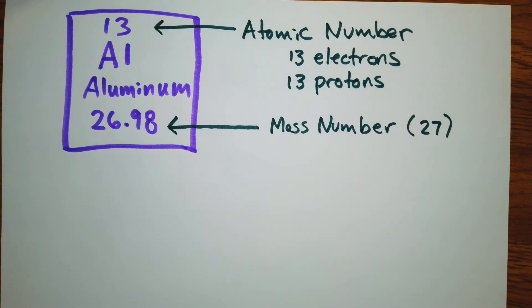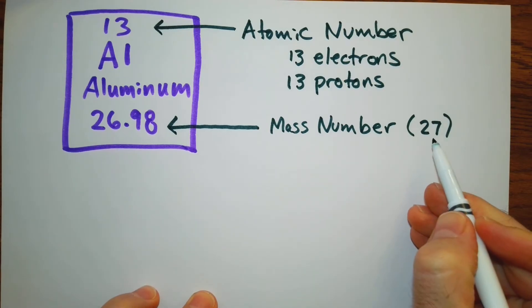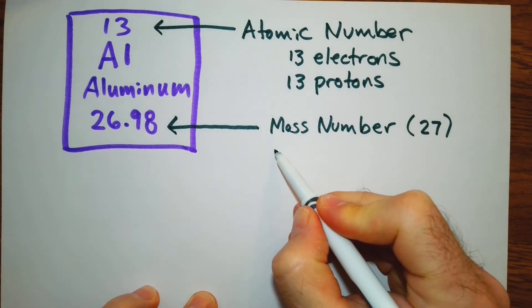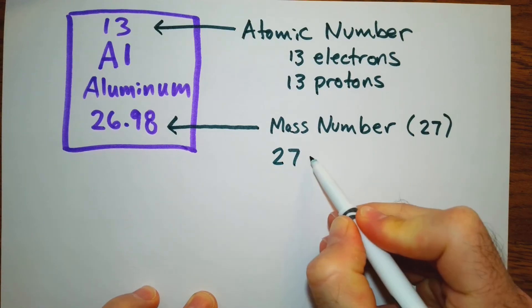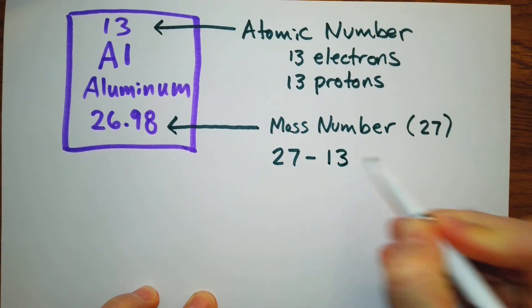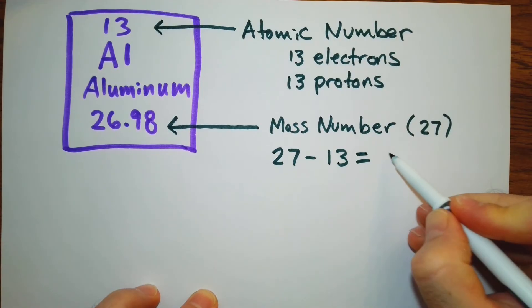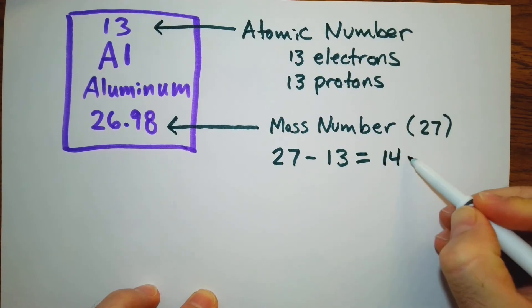Now, to calculate the number of neutrons, we're going to take our rounded mass number, 27. We're going to subtract 13. And what we should have here is 14 neutrons.